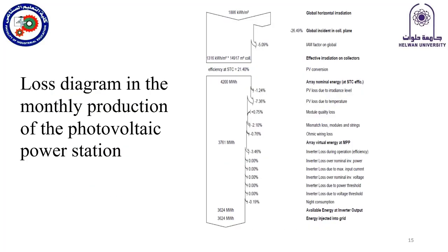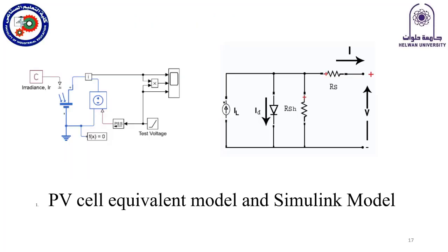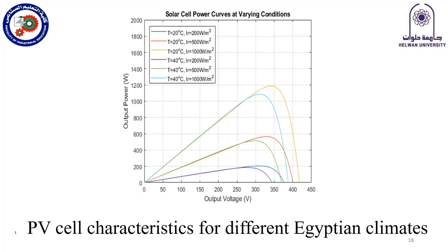The losses of this design are about 20 to 25 percent. To calculate the effect of temperature on the PV system, we studied the solar cell physics and built a semi-link model of the solar cells to study the temperature effect on performance, especially in the Egyptian climate.